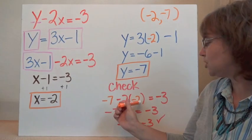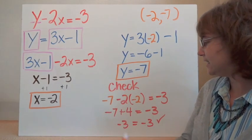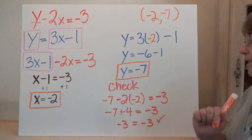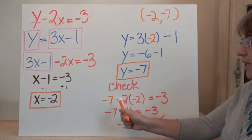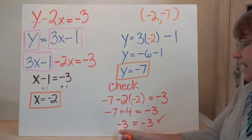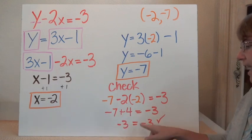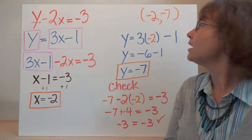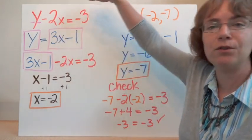I can go ahead and do a double check to make sure that this solution also satisfies the first equation. So I'm going to plug in negative 7 for y and negative 2 for x, making sure each side is equal. So I have negative 7 minus 2 times negative 2 equals negative 3. Negative 2 times negative 2 is 4, so negative 7 plus 4 equals negative 3. And negative 3 on this side — those are equal, so the solution is (negative 2, negative 7).